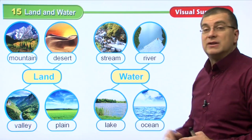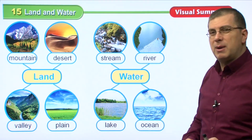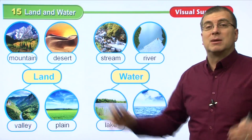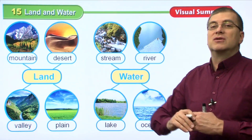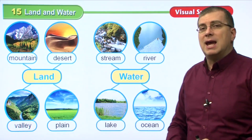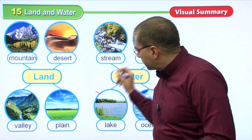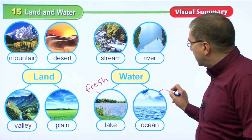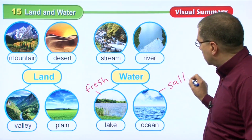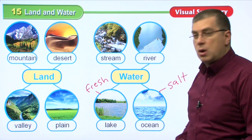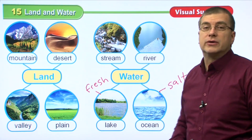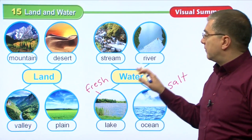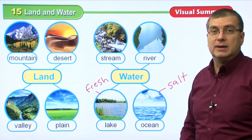We also saw lake — a lake is fresh water. And we talked about oceans before; oceans are salt water. We talked about the five main oceans of the world. Oceans are very, very big and have salt water. An important thing to remember: a lake has fresh water and an ocean has salt water. Streams and rivers are also fresh water. So we have four types of land and four types of water in this lesson.